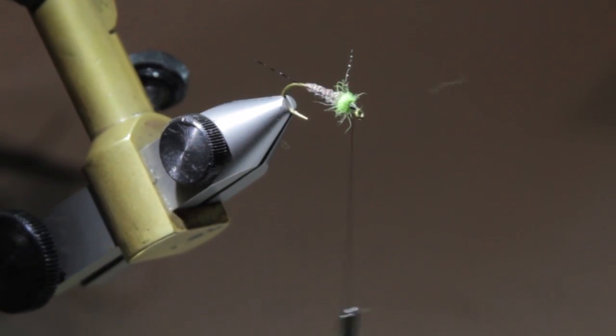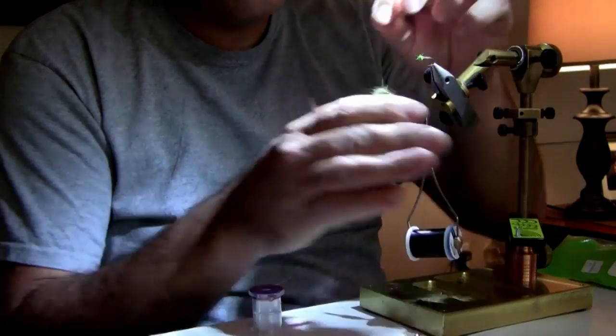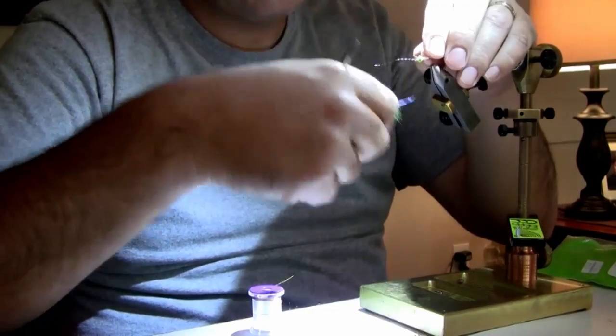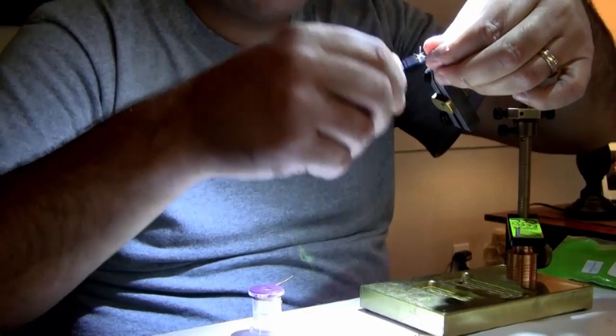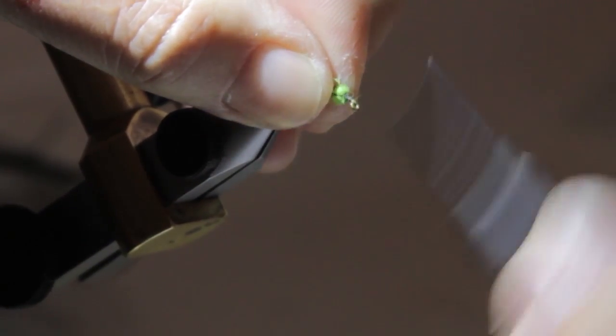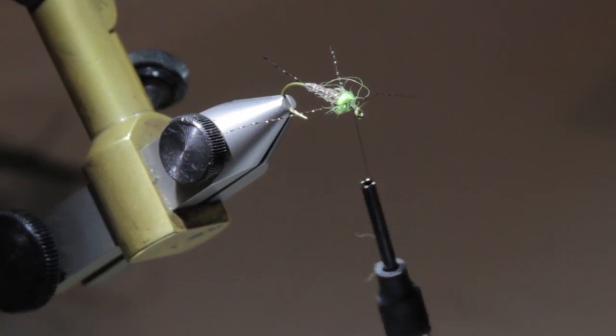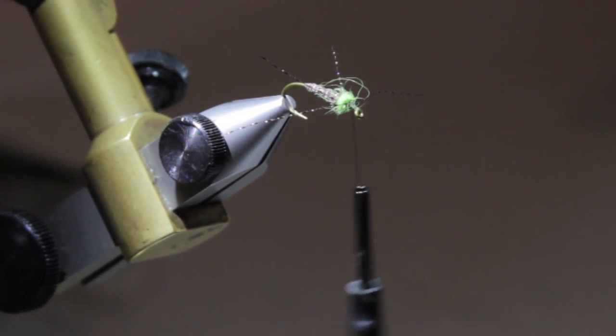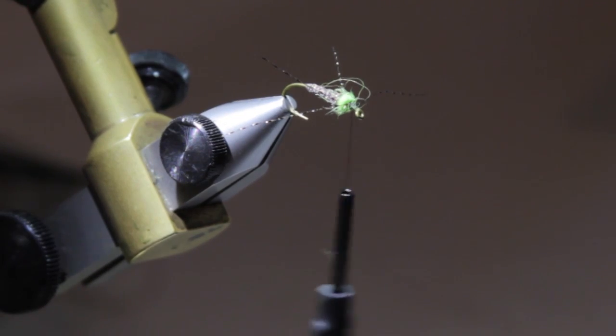Next we'll put another set of legs in. I'm going to push those right up against the ball we just created. A little bit of black dubbing because we have one more set of legs to lay in here.